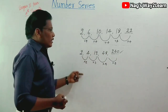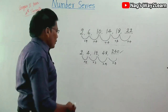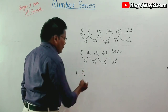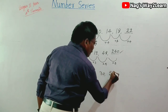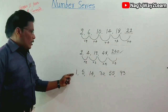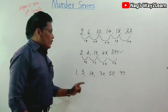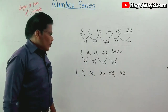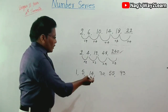In type 2, a series of numbers is given and you have to find the wrong number in the given series. For example: 1, 5, 14, 30, 55, 93. Here you need not find the next number, but there is one wrong number in this series — you have to find it. To find the wrong number, you have to establish a relationship between the given numbers.